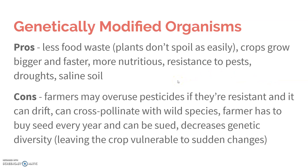On the one hand, you do have less food waste. We have engineered food to last longer, so it doesn't spoil as easily, meaning more food gets to the consumer. Crops can grow bigger and faster. We can also put more nutrition into those food items. We also have natural resistance to pests and droughts and salty soil.